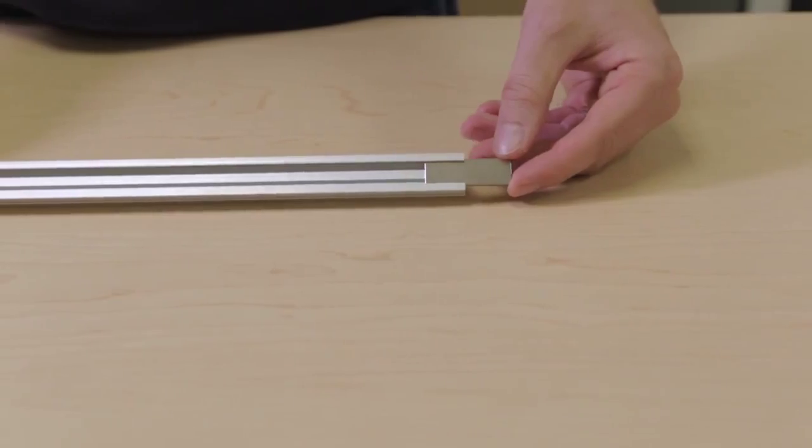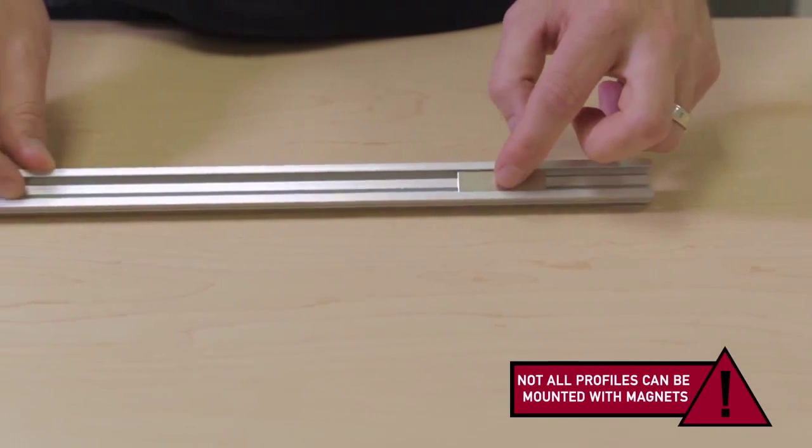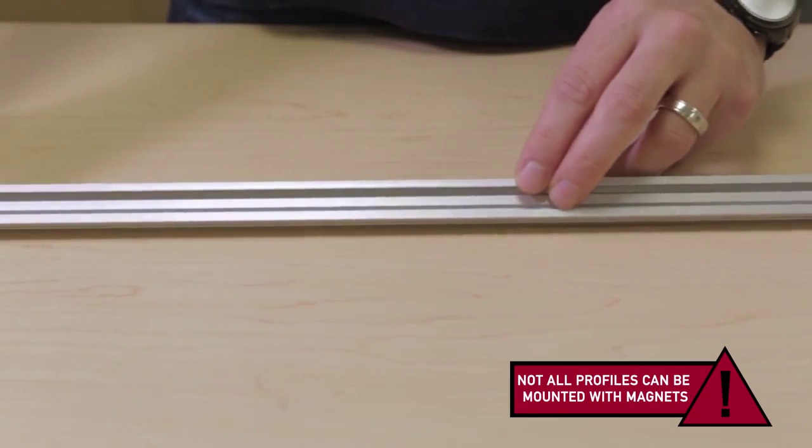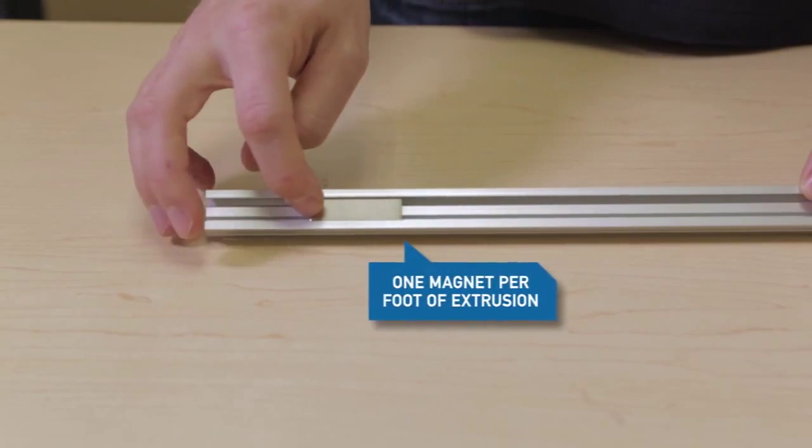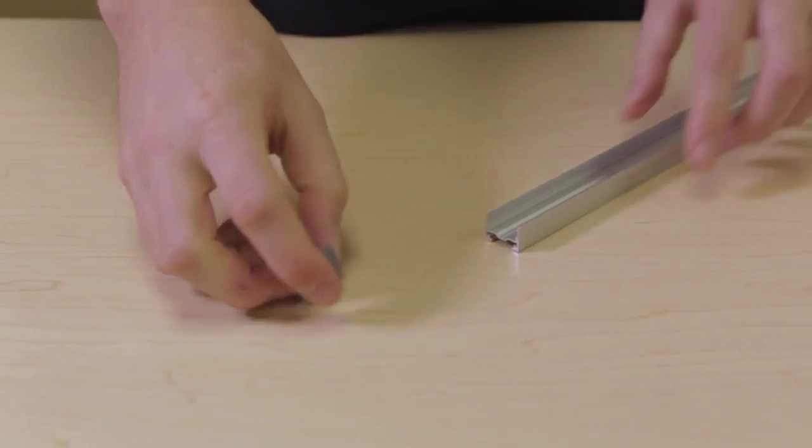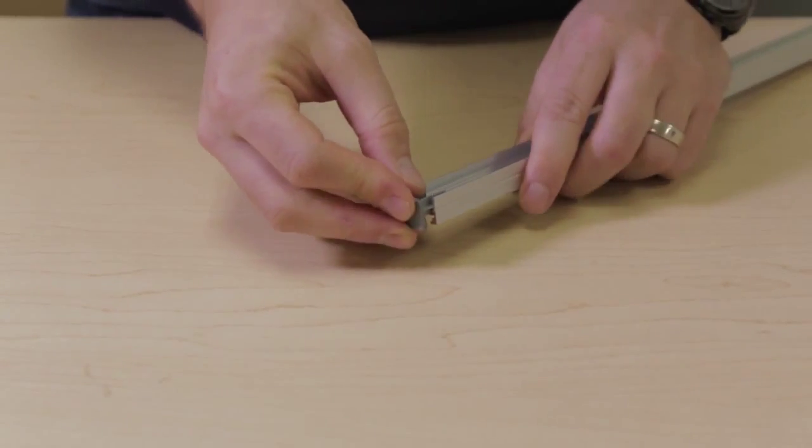If your build requires magnets, go ahead and insert them into the bottom extrusion channel. We recommend one magnet per foot of extrusion for proper mounting. Now we will insert the end caps.